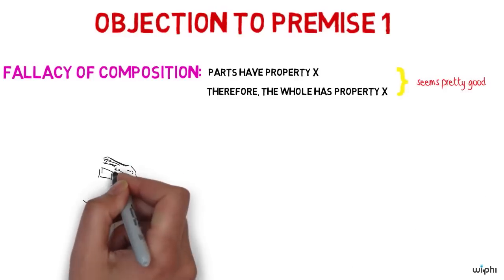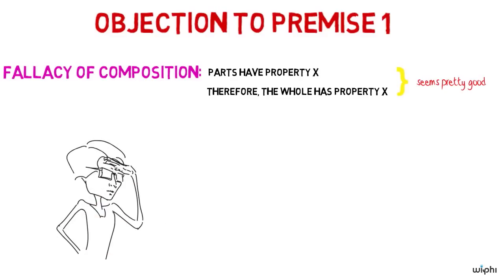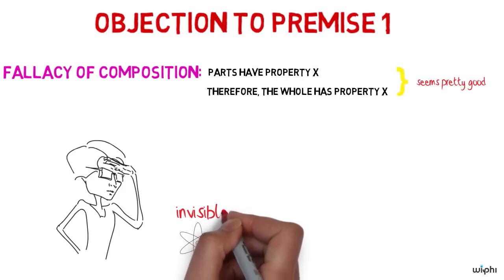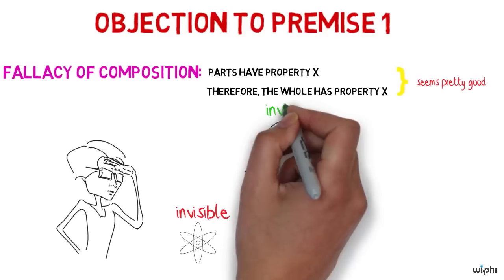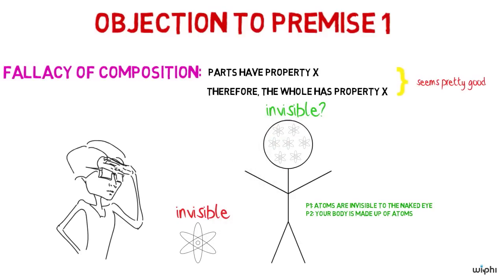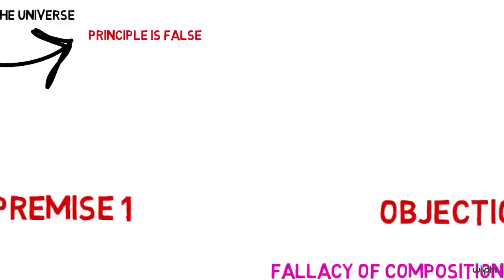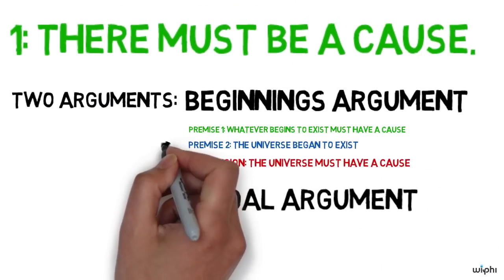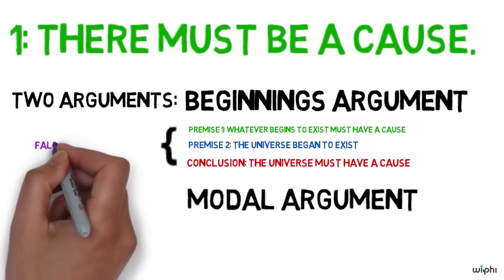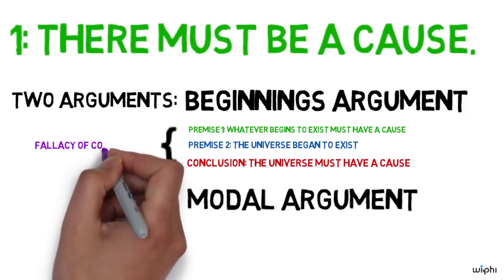Consider this argument. All the atoms of your body are invisible to the naked eye. Your body is just these atoms, therefore your body is invisible to the naked eye. But this conclusion is obviously false, even though both the premises are true. Is the same mistake happening in the case of the universe having a cause because it has a beginning, in the same way that things within the universe must have a cause because they have a beginning? Is there some mistake going on from the move from the part to the whole?